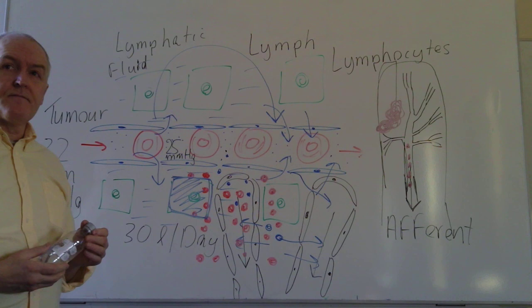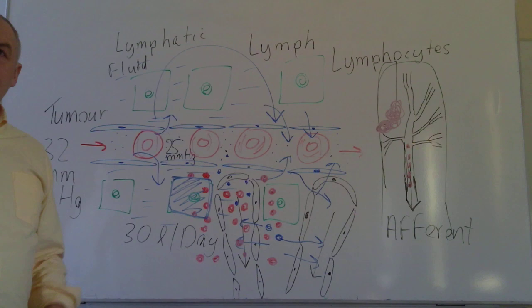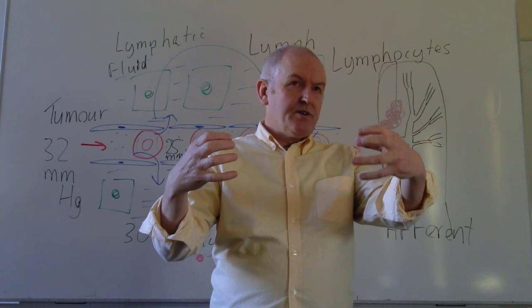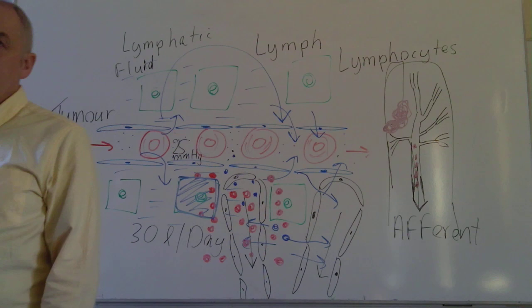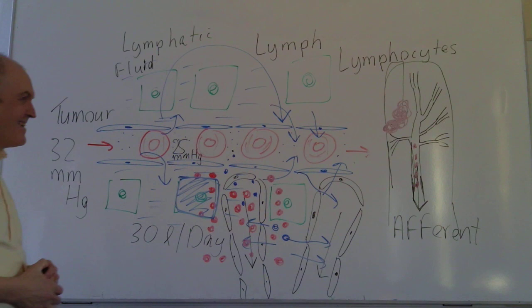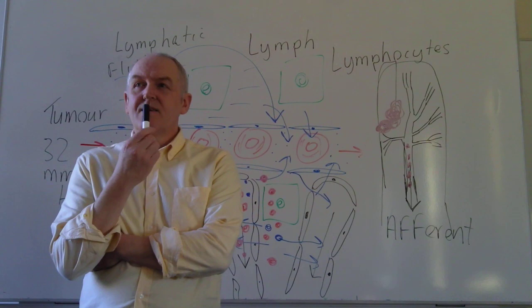If the lymphatic system isn't working you'll become puffy — you'll get an area of oedema. So as long as you haven't got an oedematous area, it's working properly. If you compare the two halves of the body — say one ankle with the other — and they're both equally slim with neither being oedematous, it's reasonable to infer that your lymphatic system is draining adequately and is normal.